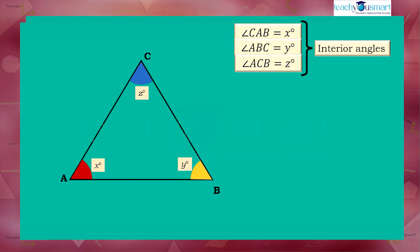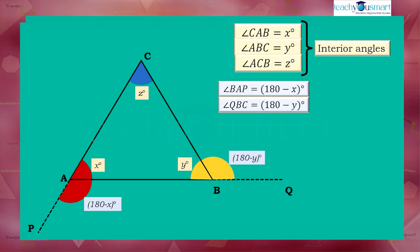And the corresponding exterior angles will be angle BAP equals 180 minus X, angle QBC equals 180 minus Y, and angle ACR equals 180 minus Z.